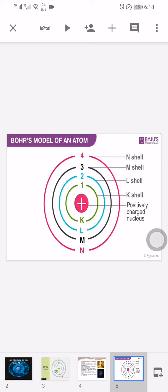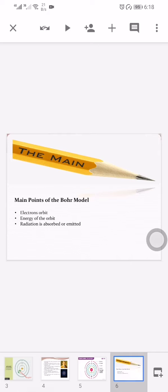The next one is the main points of the Bohr model. Electrons orbit the nucleus in orbits that have a set size and energies. The energy of the orbital is related to its size. The lowest energies are found in the smallest orbit. Radiation is absorbed or emitted when an electron moves from one orbit to another.